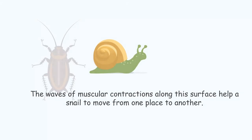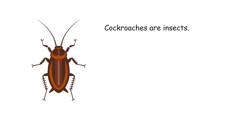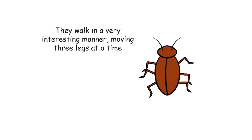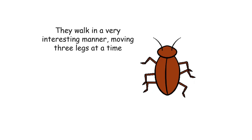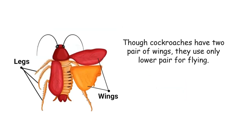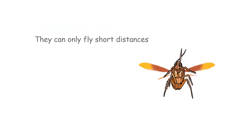Cockroaches are insects. They can walk, climb and fly. Like all insects, cockroaches have three pairs of legs. They walk in a very interesting manner, moving three legs at a time. Though cockroaches have two pairs of wings, they use only the lower pair for flying. They can only fly short distances.